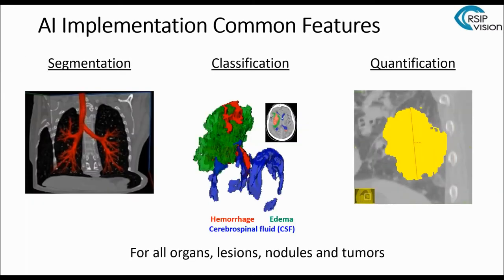AI can do many things, many of which fall under the categories of segmentation, classification, and quantification. Segmentation means we segment the different things in the image — organs, lesions, nodules, tumors, or in pathology, cells, tissues, and nuclei. We then classify the different things we've segmented. And oftentimes there's also a need for quantification, which means putting a number on those findings — whether it's length, volume, density, or simply counting how many findings are present — and we can do all of that very accurately and quickly.